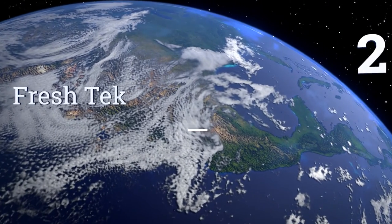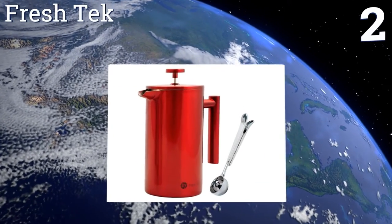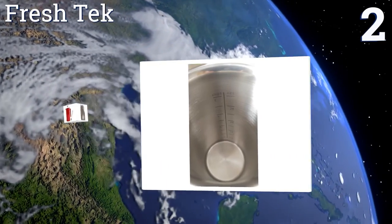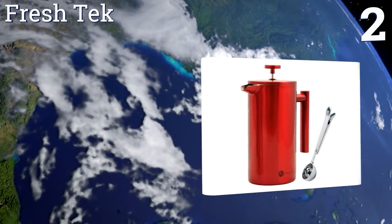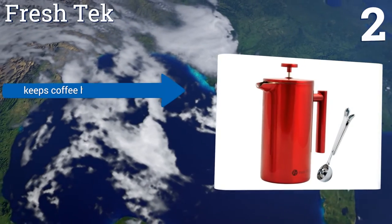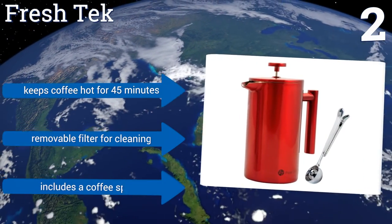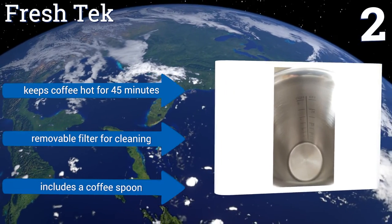At number two, unlike all the other boring silver stainless steel presses out there, the FreshTech is available in a vibrant red or sleek black color, giving it a more modern feel. It features measurement markings on the interior to help you create the perfect cup of coffee. It keeps coffee hot for 45 minutes and comes with a removable filter for cleaning and a coffee spoon.